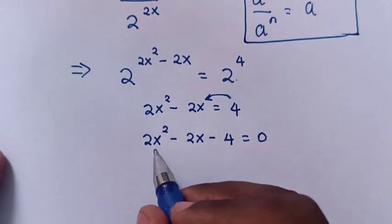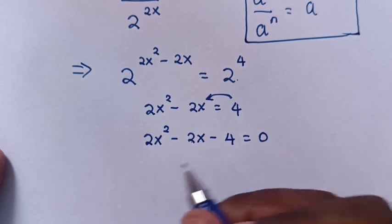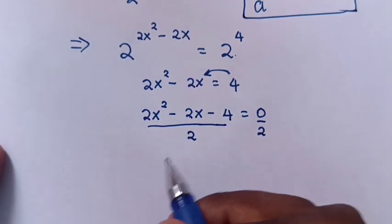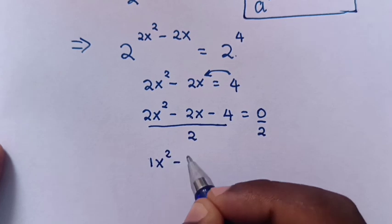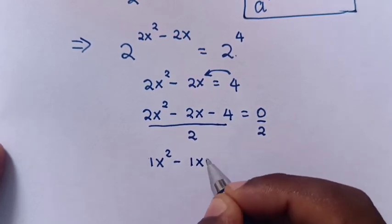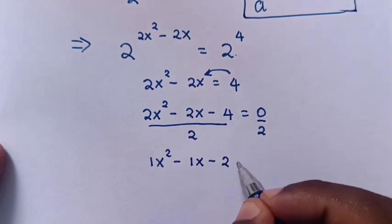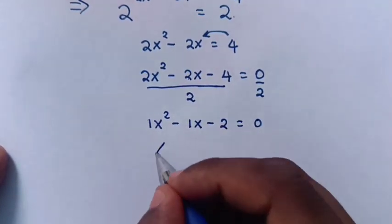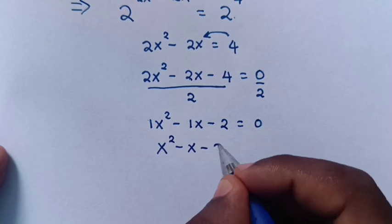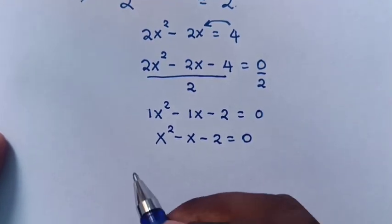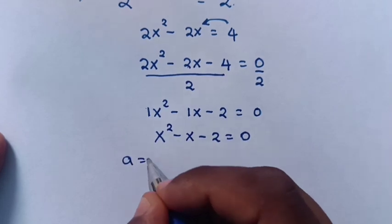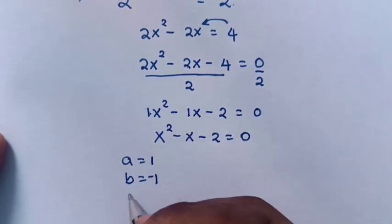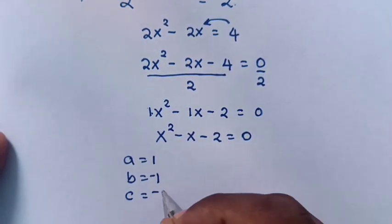Dividing through by 2 gives x squared minus x minus 2 is equal to 0. From this quadratic equation, a is equal to 1, b is equal to negative 1, and c is equal to negative 2.